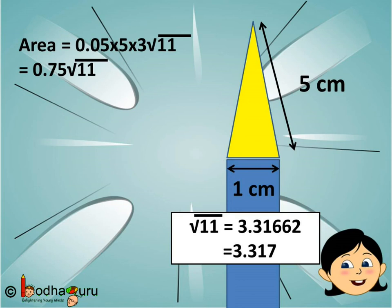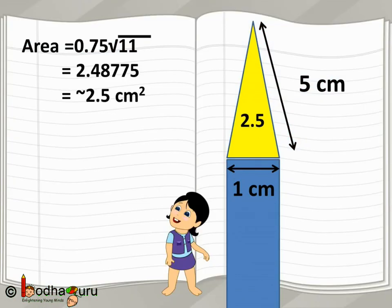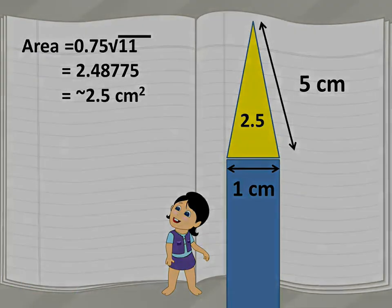Square root of 11 is 3.3166 or we can say 3.317 approximately. So, we say the area of this triangle is approximately 2.5 square centimeter. We will do the calculation of the remaining parts in the next video.